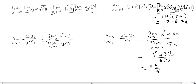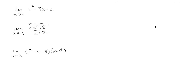As we learn more rules, we'll need to use these properties without rewriting them each time. So let's look at a couple of example problems. The first is the limit as x approaches 4 of x squared minus 3x plus 2.